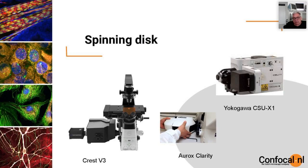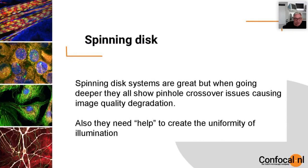Some of these systems are very good — the Yokogawa spinning disk in particular has been extremely successful over the years. It can go very fast, but spinning disk systems have one problem: when they go deeper they show pinhole crosstalk issues. This means they are excellent for flat living cells, but if you have something deeper like an organoid they struggle to maintain good image quality. Also, because of the design of the spinning disk, they all need some help to create uniformity over the field.